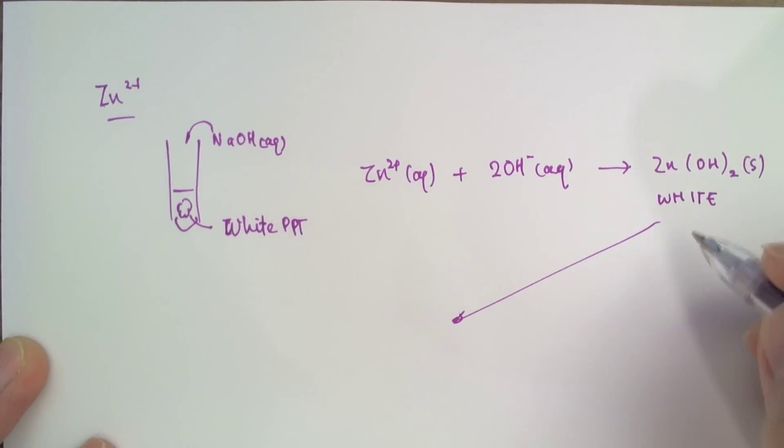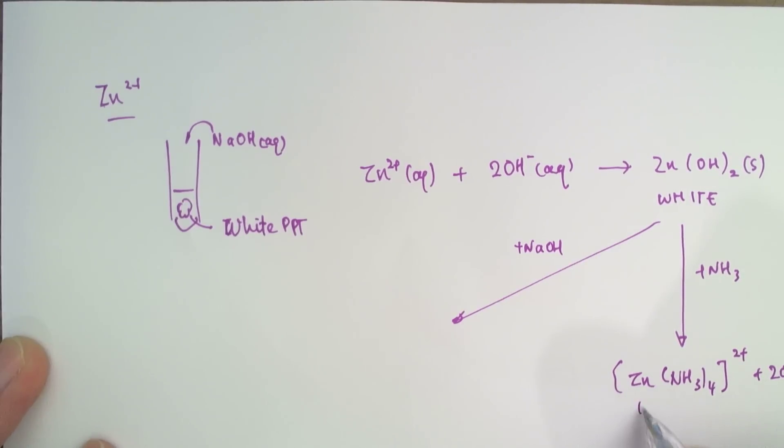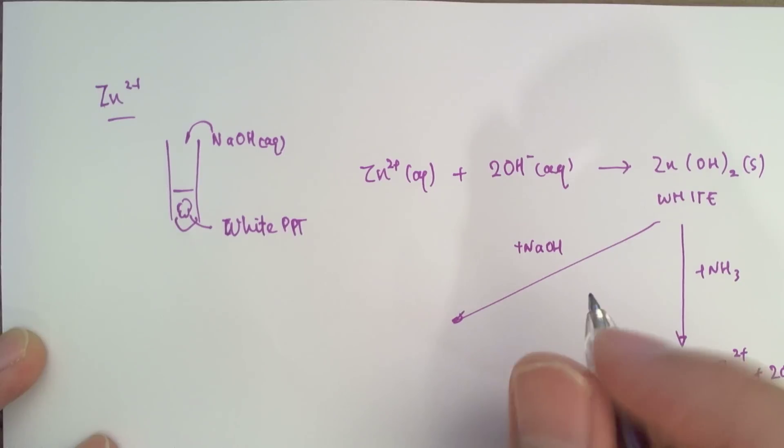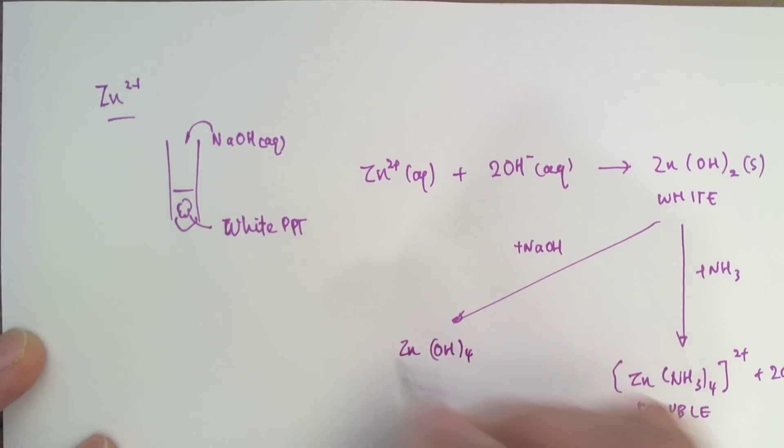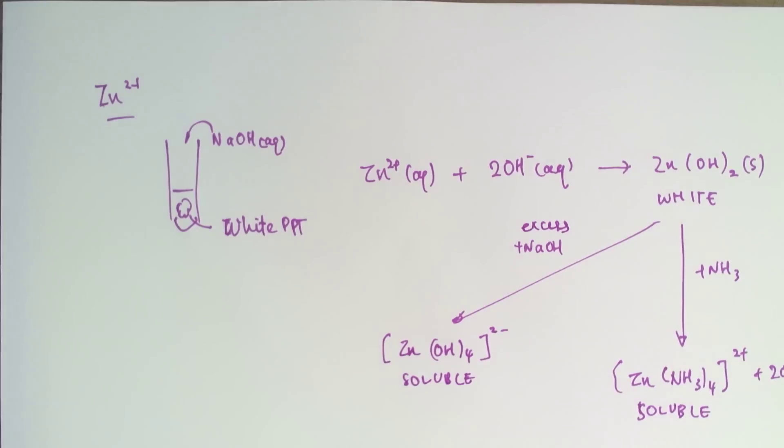Now, we can do further tests to distinguish this from calcium and aluminum by adding excess sodium hydroxide or ammonia. Now, in the presence of ammonia, what results is an amine complex, pushing two hydroxides out. And this is soluble. So the zinc hydroxide is soluble in ammonia, and it is also soluble in excess sodium hydroxide, because it will further form a different complex, this time with four hydroxides attached to zinc, which is also soluble. So zinc is soluble in both excess sodium hydroxide as well as ammonia.